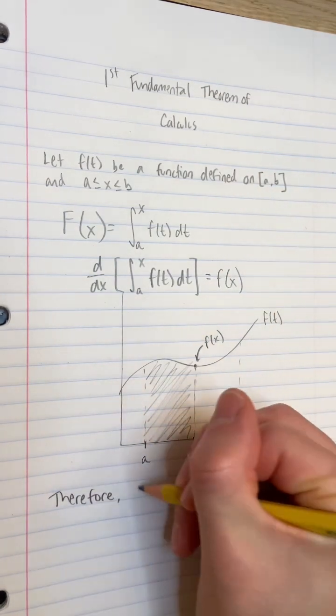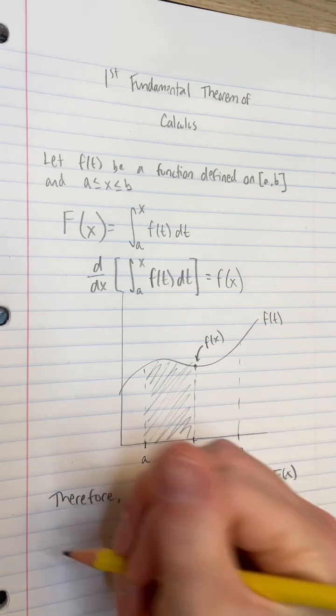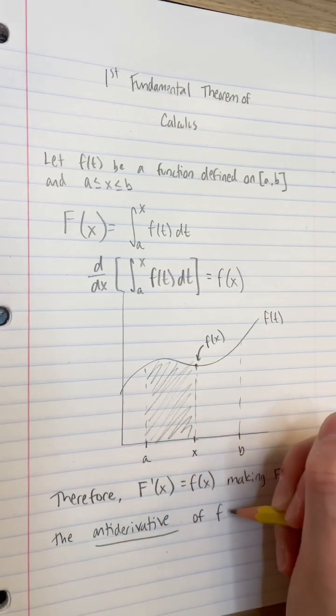Therefore, the derivative capital F prime of x is equal to f of x, making capital F of x the antiderivative of f of x. So cool.